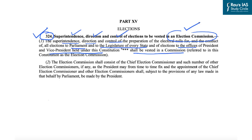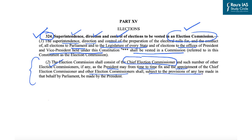Article 324 also provides that the Election Commission shall consist of the Chief Election Commissioner and such number of other Election Commissioners as the President may from time to time fix. The appointment of the Chief Election Commissioner and other Election Commissioners shall be made by the President, subject to provisions of any law made by Parliament in this behalf.